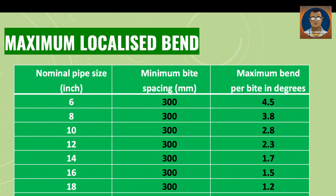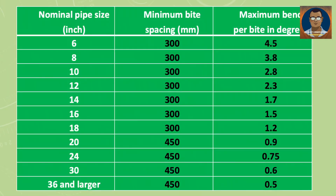Here is a comparative table for maximum localized bend. For a 6-inch pipe, the minimum bite spacing is 300 millimeters and the maximum bend per bite is 4.5 degrees. For a 16-inch diameter pipe, the bite spacing is also 300 mm but the maximum degree of bending is reduced to 1.5 degrees. For a 30-inch pipe, the minimum bite spacing increases to 450 millimeters and the bite angle is much reduced — only 0.6 degrees per bite. For larger diameter pipes, the bite spacing increases and the maximum degree of bend per bite decreases, to prevent buckling or wrinkles.